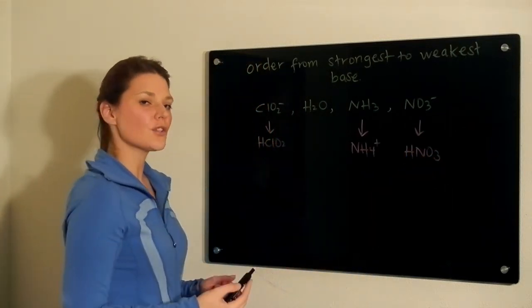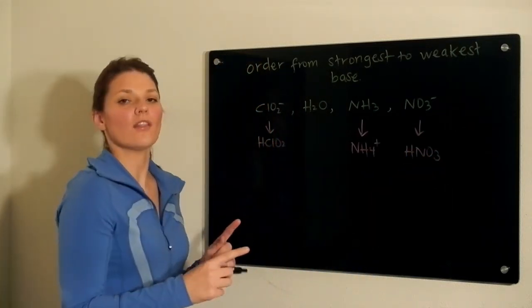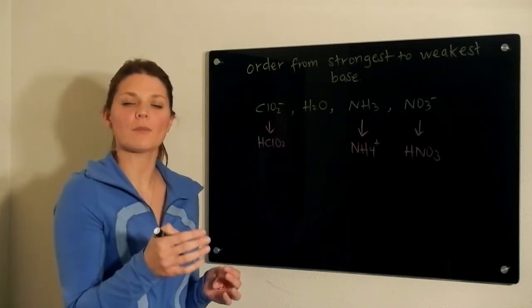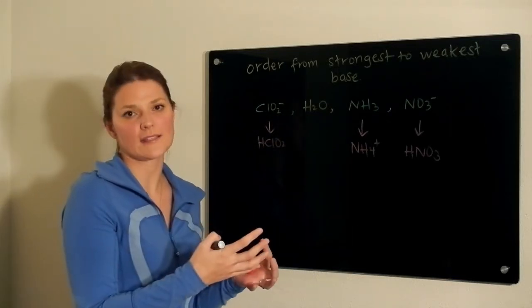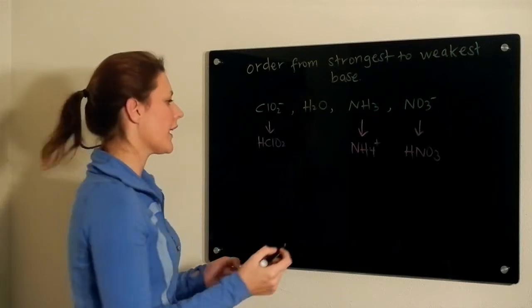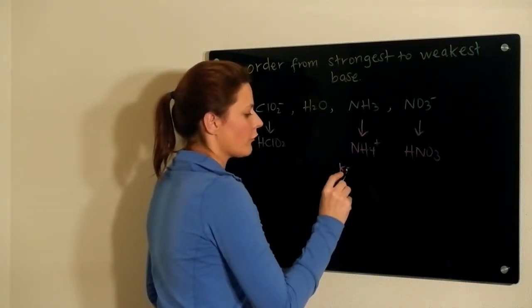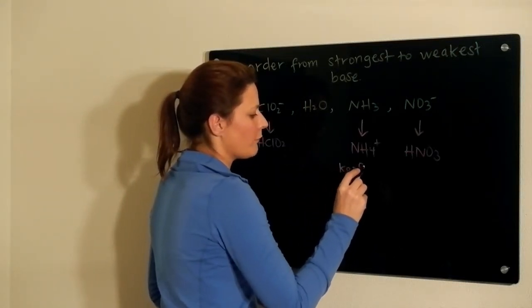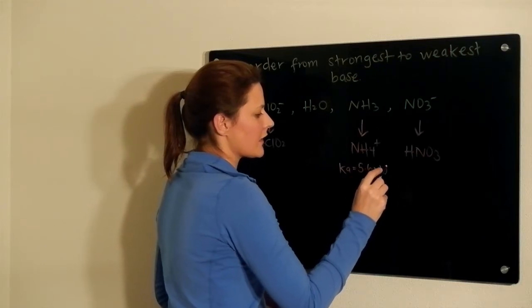So what I want to do now is to compare their Ka values and order them from strongest acid to weakest acid. If you look up the Ka value, you will find one for ammonia of 5.6 times 10 to the minus 10.